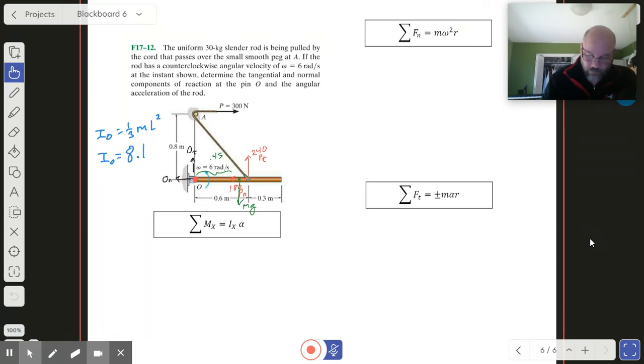Well, let's move to summing our moments. We are summing about O in this case, and so we get no moment from O_T, no moment from O_N, no moment from P_N. We get a moment from P_T, and that is going to be positive, so positive P_T, and it's out there at a distance of 0.6. We've got a negative moment from the weight, so minus mg, and it's at a distance of 0.45, and that has to be equal to I_O times alpha.